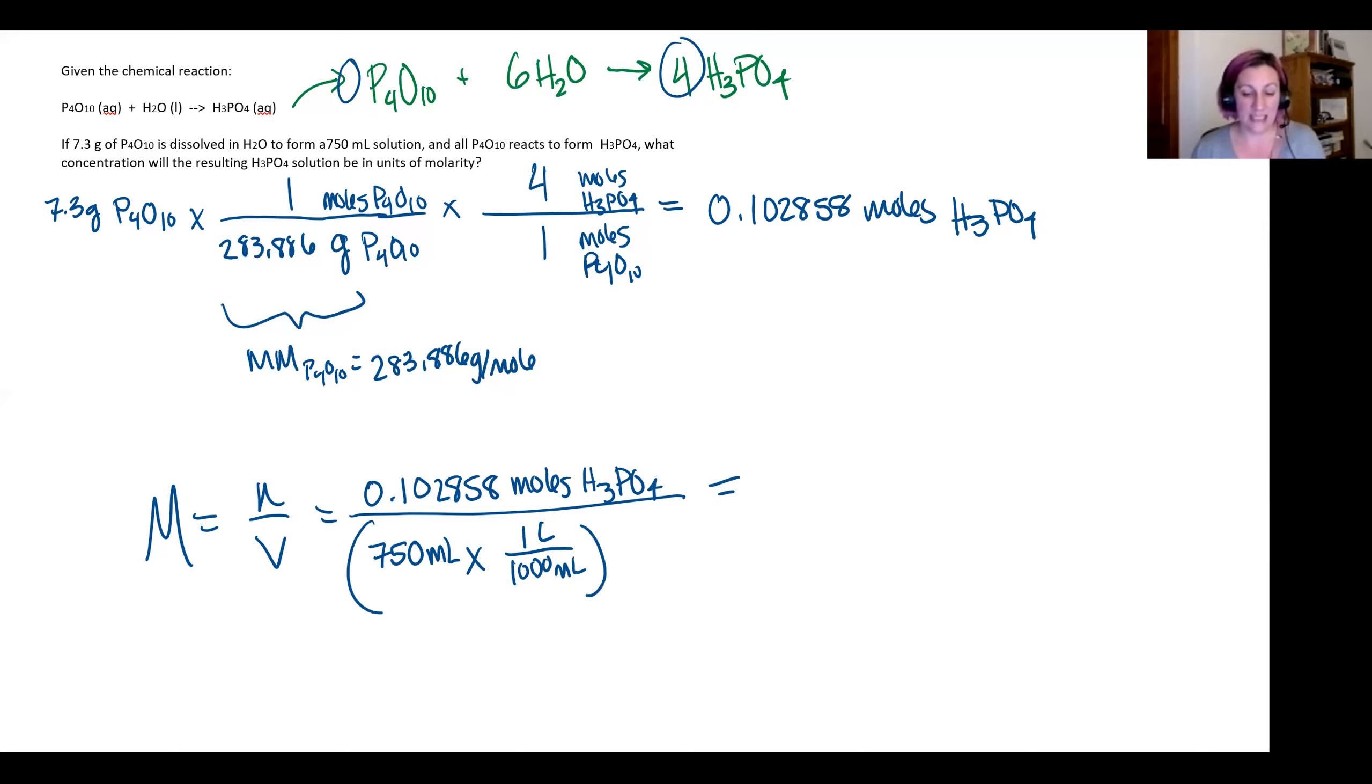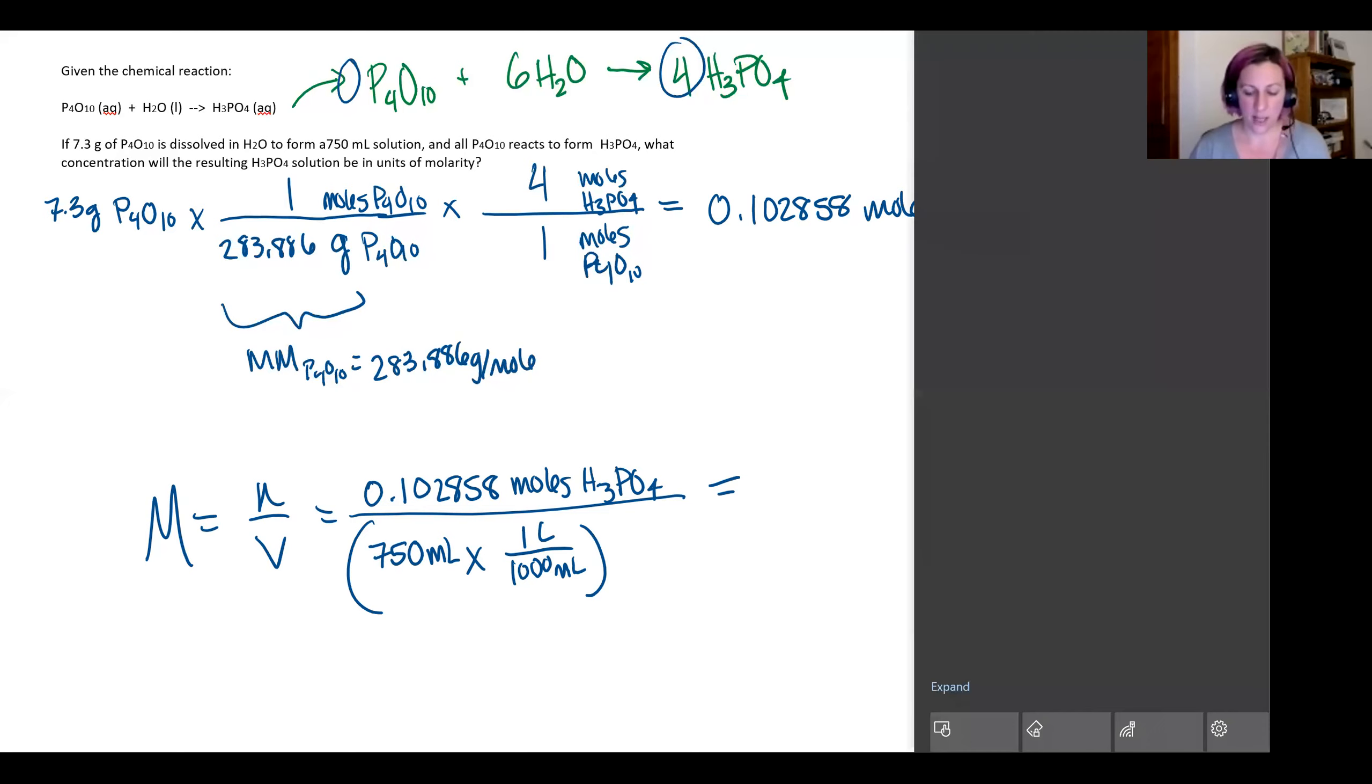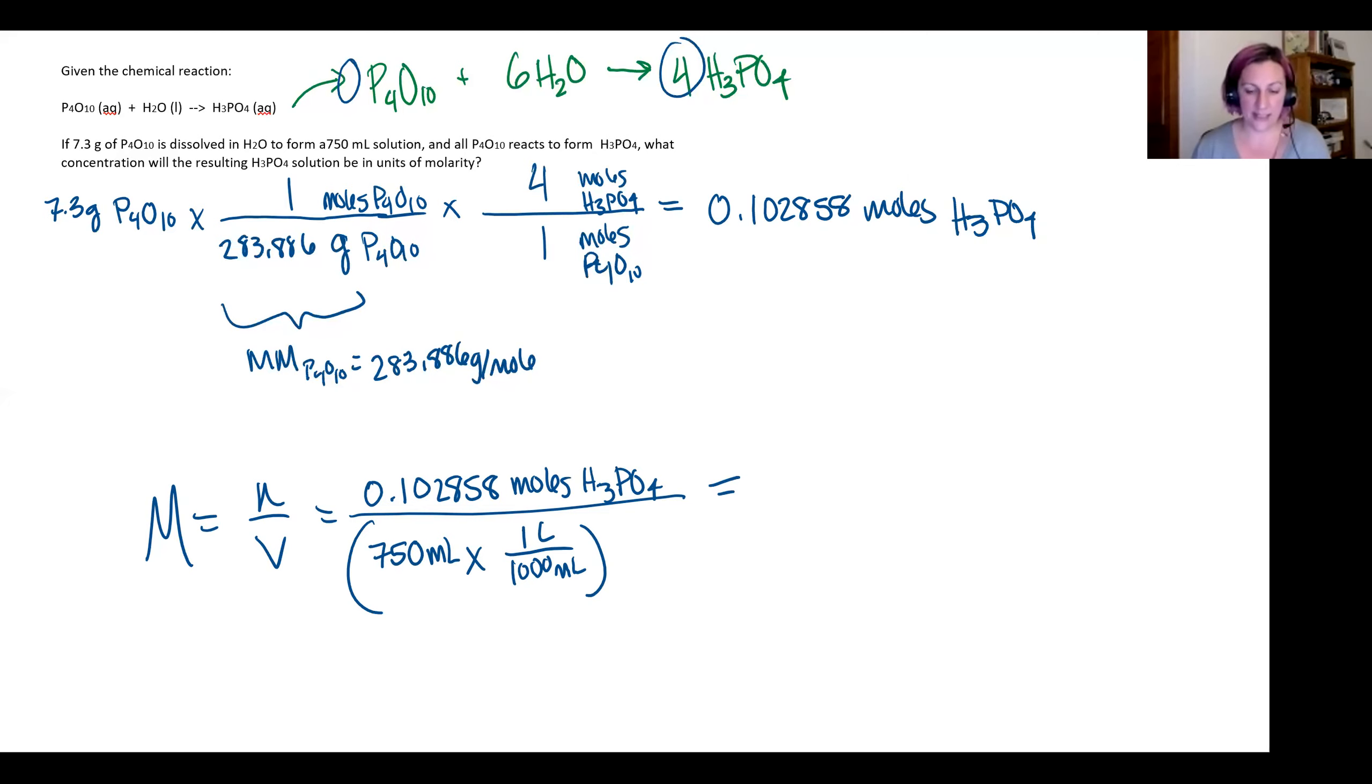Now plugging this all into my calculator, I'm going to get a value that is 0.14 molar. I restricted myself to two sig figs because I had two sig figs in my 750 milliliters and two sig figs in my 7.3 grams.